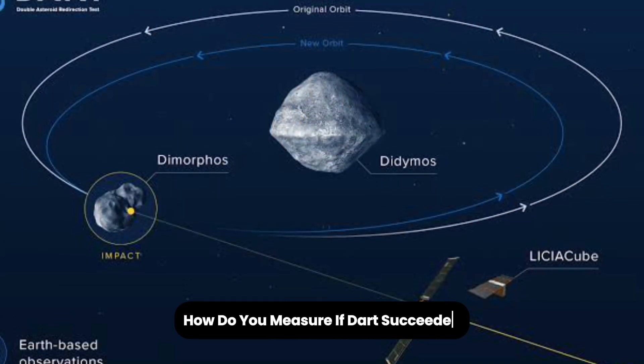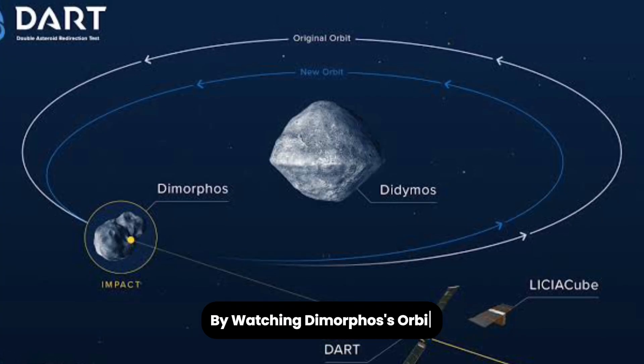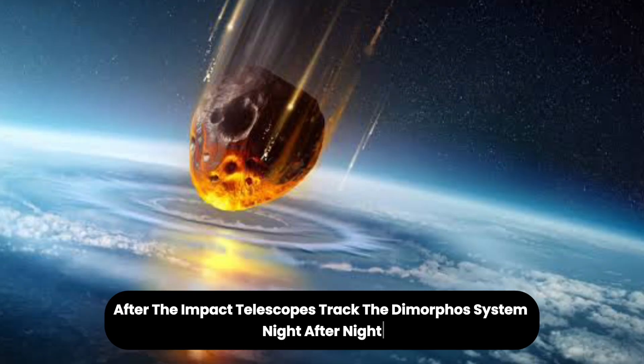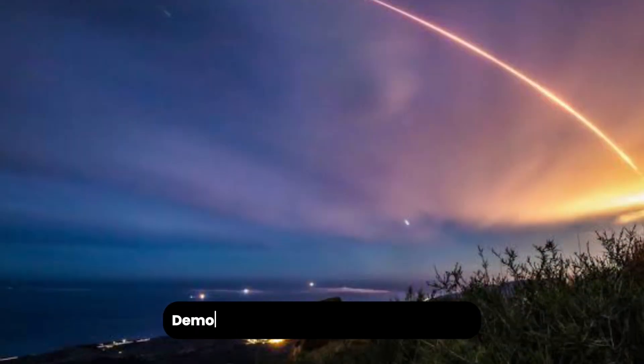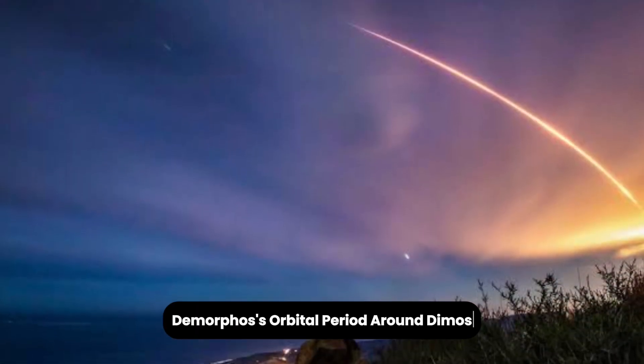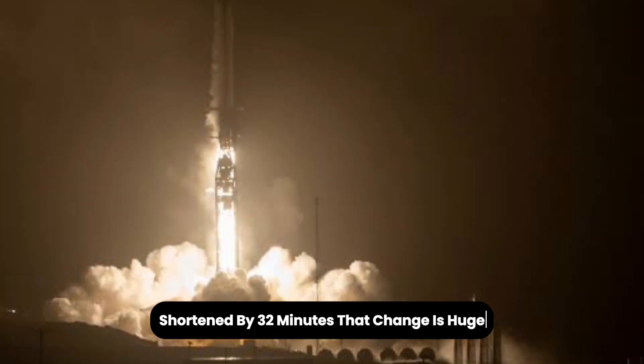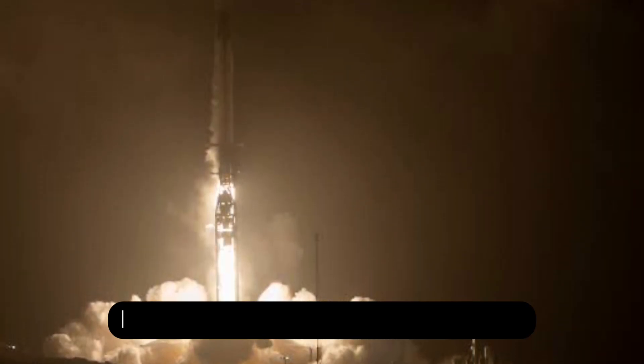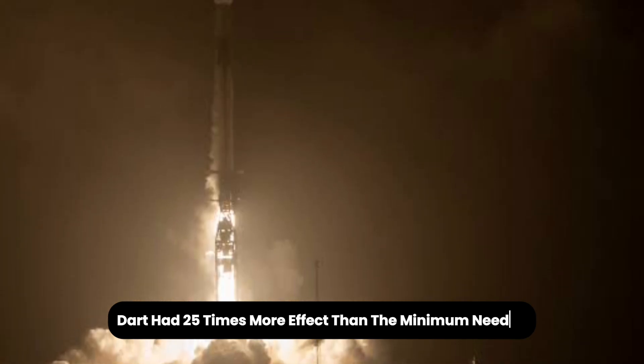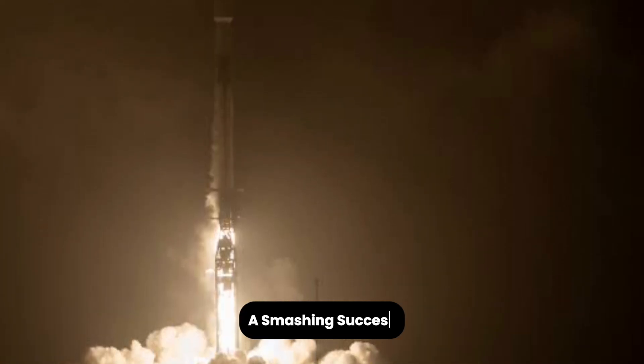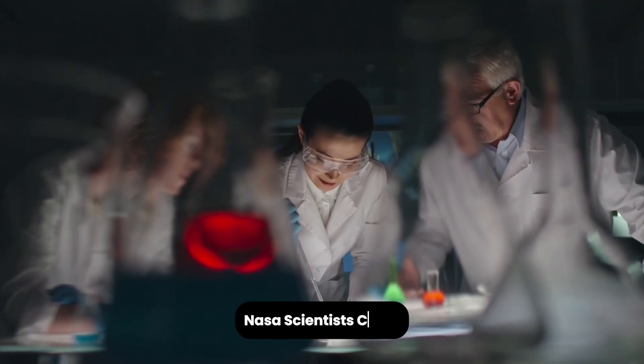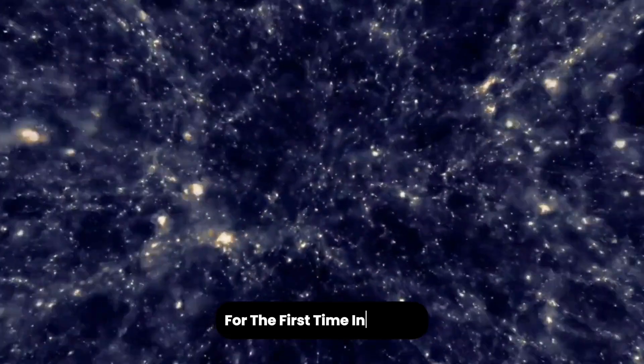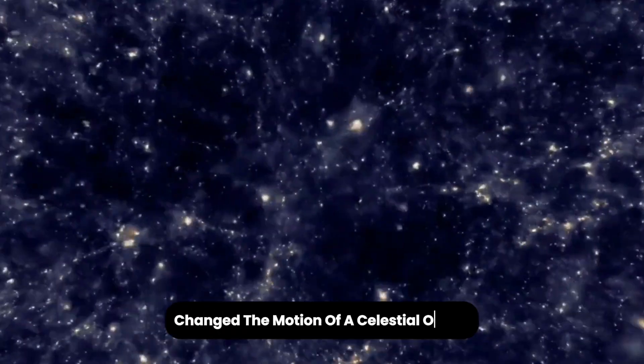How do you measure if DART succeeded? By watching Dimorphos' orbit. After the impact, telescopes tracked the Didymos system night after night. The data confirmed Dimorphos' orbital period around Didymos shortened by 32 minutes. That change is huge compared to the 73-second goal NASA had set. This result shows DART had 25 times more effect than the minimum needed. A smashing success. NASA scientists cheer not just because they hit the target, but because it proves the concept. For the first time in history, humans purposely changed the motion of a celestial object.